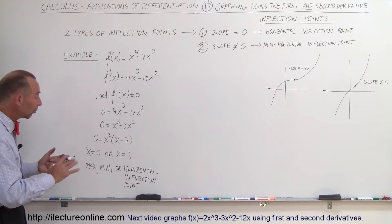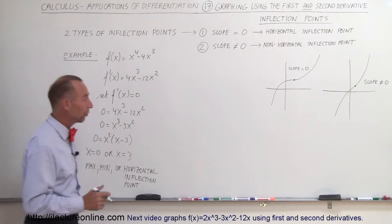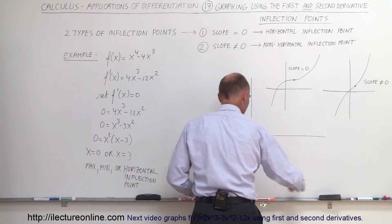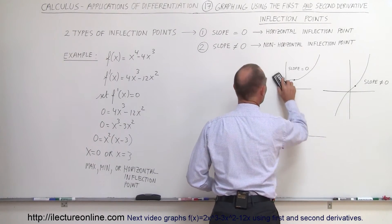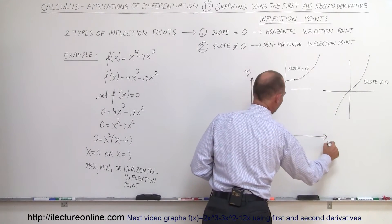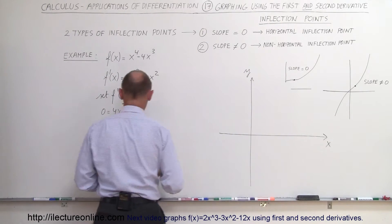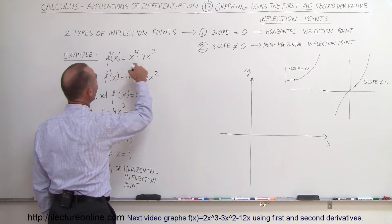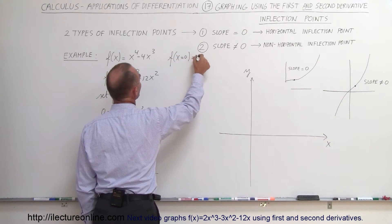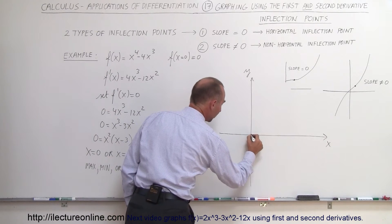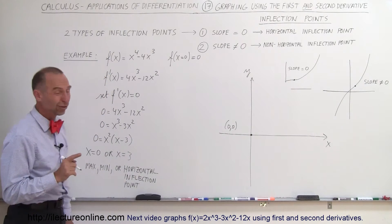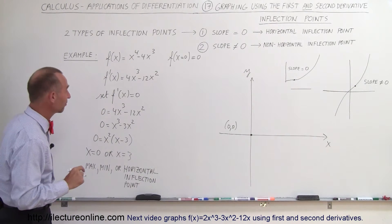If we graph that, we get some idea where those points are. Here's our y-axis and x-axis. Let's plug those points back into the original function. When x = 0, y = 0 — so that's the point (0, 0), right here. That's one of our critical points; we know the slope is zero there, we just don't know if it's a max, min, or a horizontal inflection point.